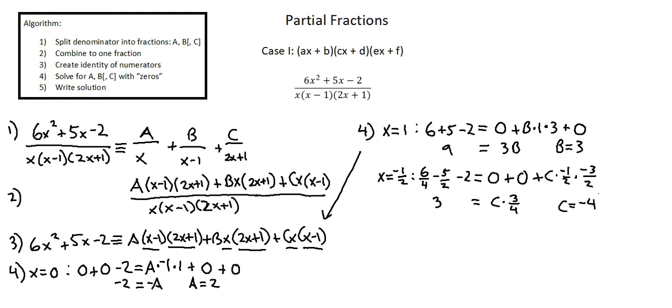So now we have values for A, B, and C. We're done with step 4. We can move to our final step. Step 5. Write solution. 6x squared plus 5x minus 2 over x times quantity x minus 1 times quantity 2x plus 1 is an identity with A we've solved for as 2. 2 over x.